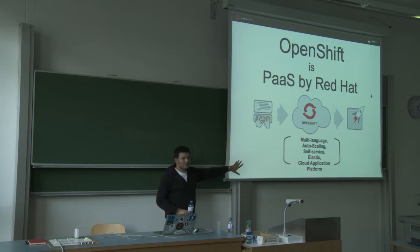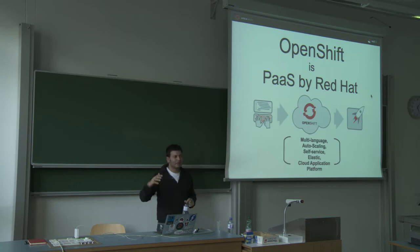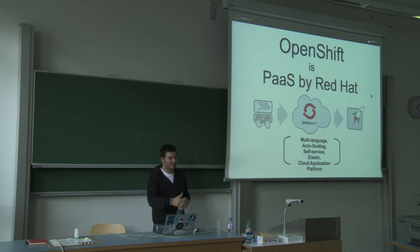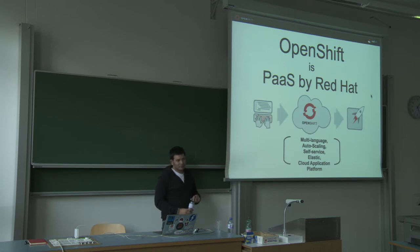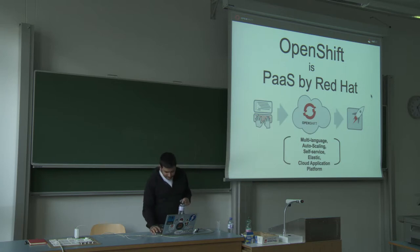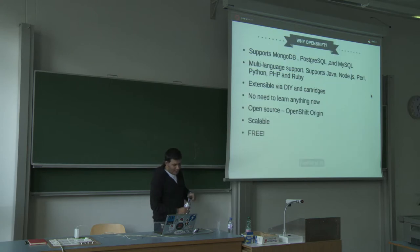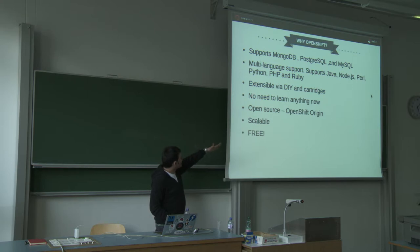OpenShift is an auto-scaling platform. When you create an application you can mark it as scalable, and depending on load, OpenShift will spin up multiple instances. It runs on top of Amazon EC2 — think of it as an abstraction layer over EC2. It supports these databases and languages I mentioned.